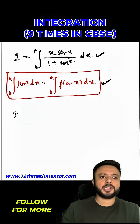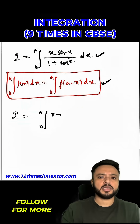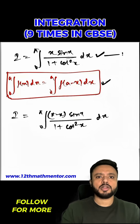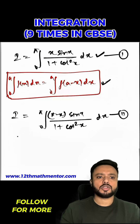After using this particular property, I can write I as the integral from 0 to π of (π minus x) times sin(π minus x), which equals sin x, over 1 plus cos²(π minus x), which becomes cos²x, dx. This is our first equation and this is my second equation.